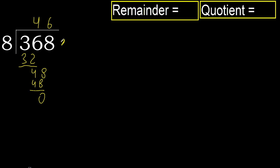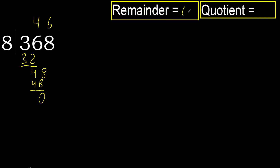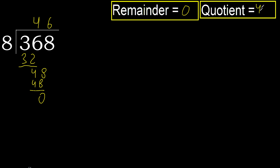That is not a number, therefore finish it. 368 divided by 8 is 46.